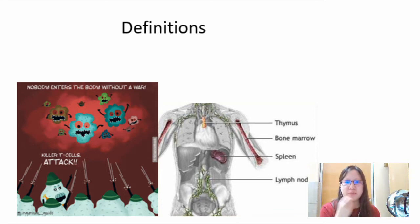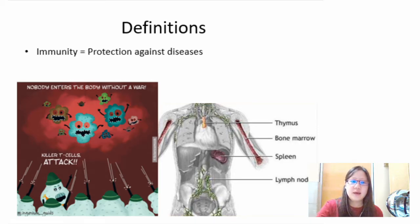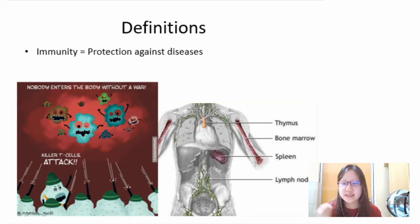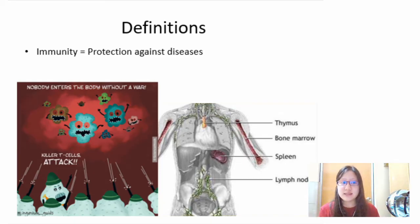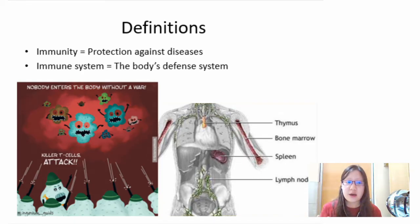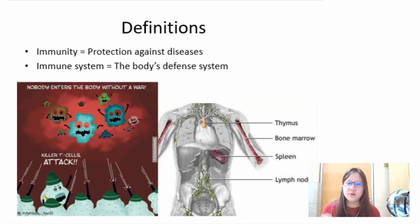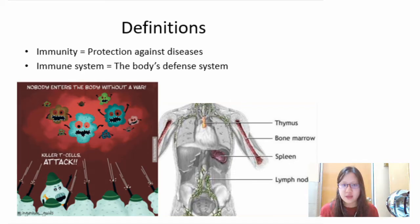Without further ado, let's go into Part 1: the immune response. First, let's cover some definitions. Immunity is protection against diseases — if I say I have immunity against a disease, it means I'm protected against it. The immune system, however, is the body's defense system.